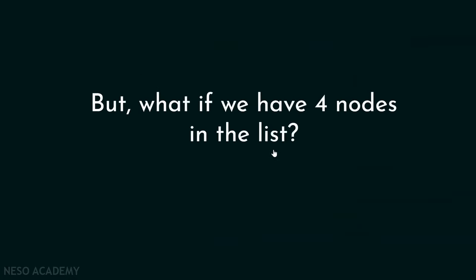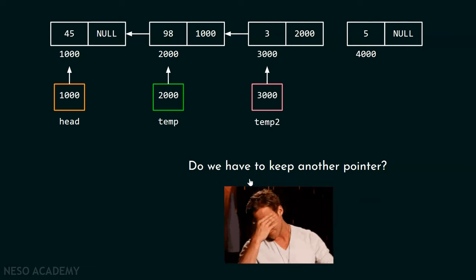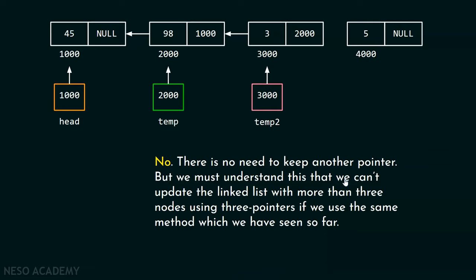But what if we have four nodes in the list? If we update the link part of the third node, we lose the reference to the fourth node. We can't reverse a list with more than three nodes using only three pointers with this approach — we'd need even more pointers as the list grows. We definitely need to change our method.